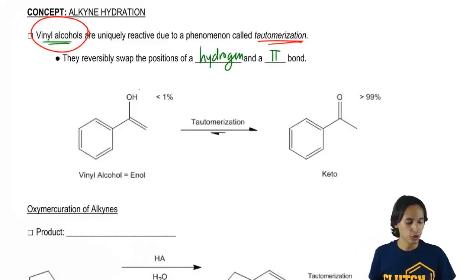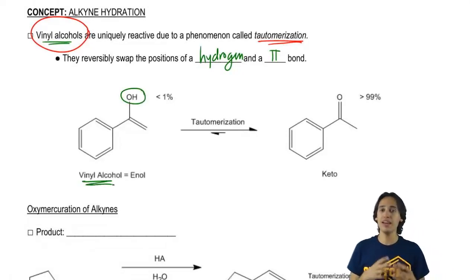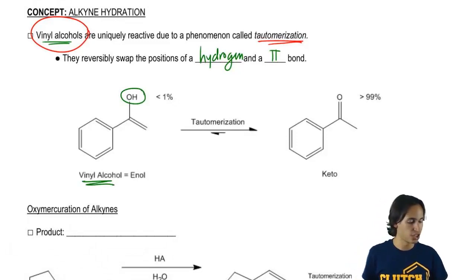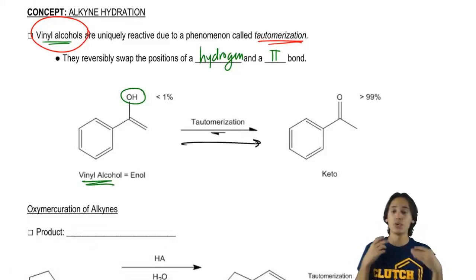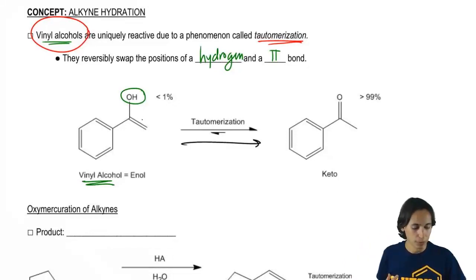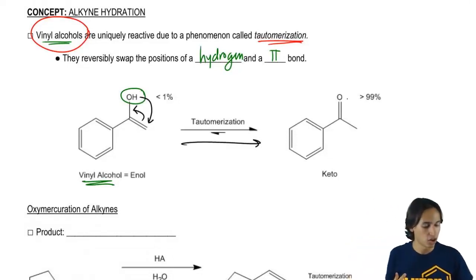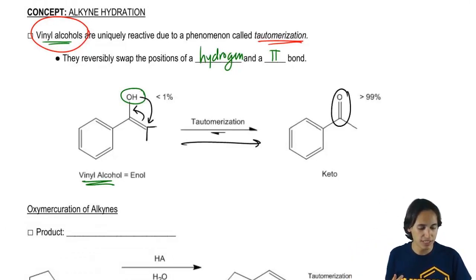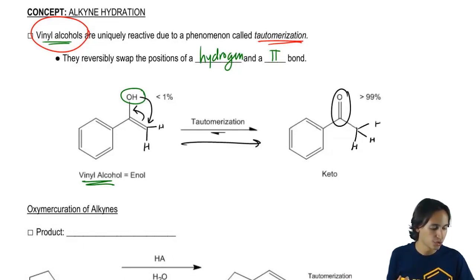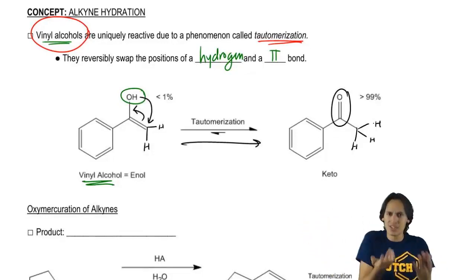Here would be an alcohol that's directly attached to a double bond — this is vinyl alcohol — and through the tautomerization process, this is going to turn into a completely different functional group where basically my double bond is going to move over here, and my H is going to move down here. So these are going to switch places. What's going to wind up happening is that you get a carbonyl formed, and instead of this being a CH2, now this is going to turn into a CH3.